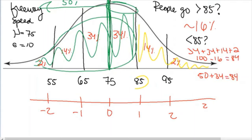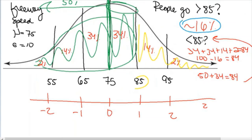All those approaches give the answer of 84%. So 84% of people go slower than you. Knowing the mean and standard deviation, we now know a lot: 68% of people travel between 65 and 85 miles per hour; if someone drives 85 mph, 16% travel faster and 84% go slower. This gives us a wealth of information.